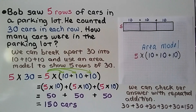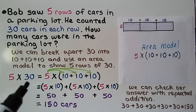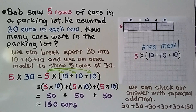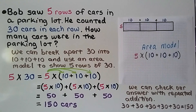We do the addition: 50 plus 50 plus 50 equals 150 cars in the parking lot. We can check our answer with repeated addition. If we have 5 times 30, that means 5 groups of 30 — we add five 30s together, which also equals 150. So we know we have the right answer and that it makes sense.